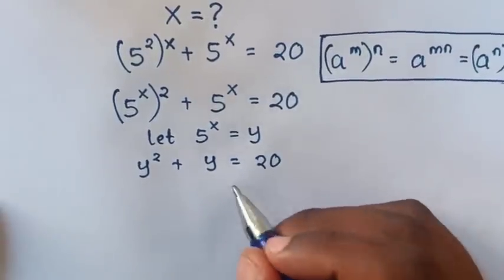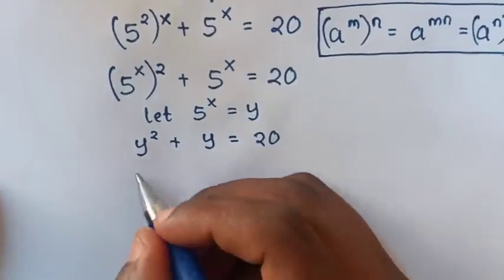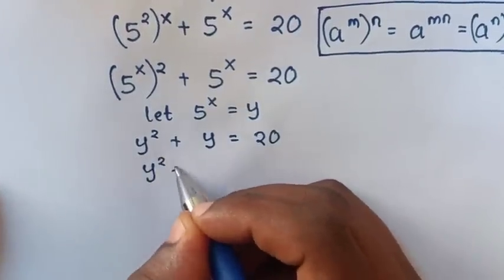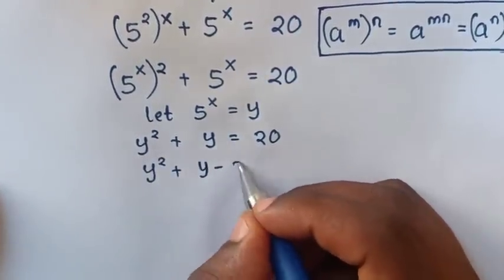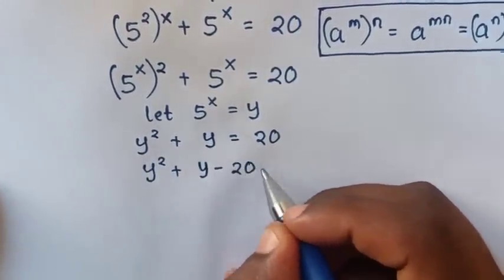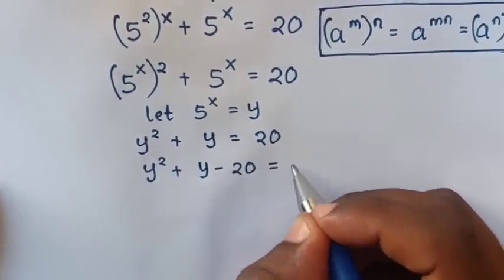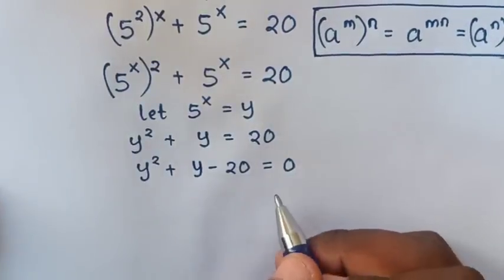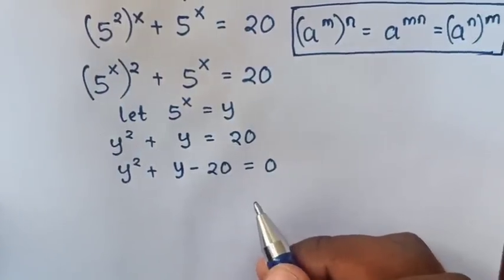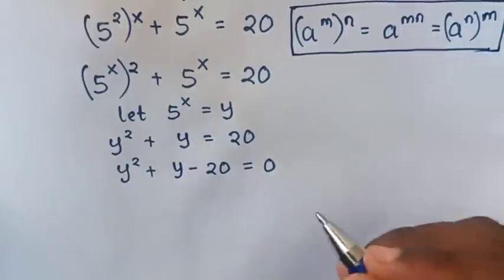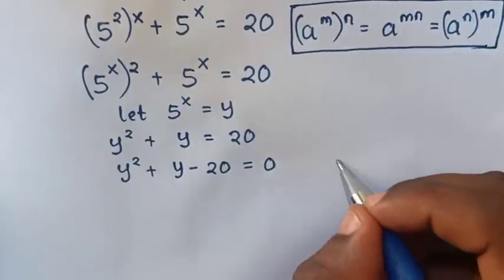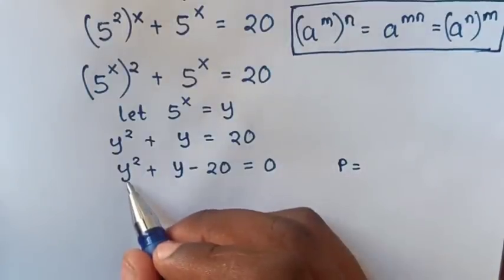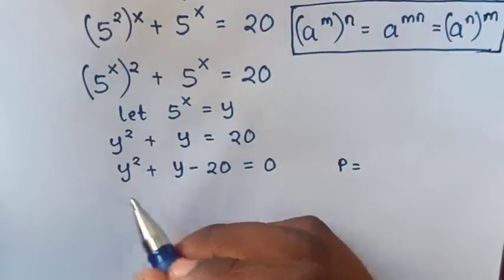We take 20 to the left side, so it becomes y squared plus y minus 20 is equal to 0. This is a quadratic equation, so we solve it by factorization, where the product is equal to the coefficient of y squared, which is 1, times the constant.